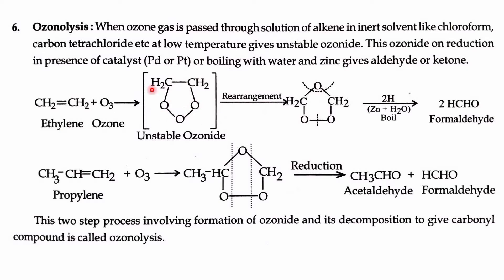This ozonide is a very unstable molecule. It undergoes rearrangement to form another molecule. In this rearrangement, the oxygens redistribute between the two carbons, with one oxygen forming another double bond with the carbons.